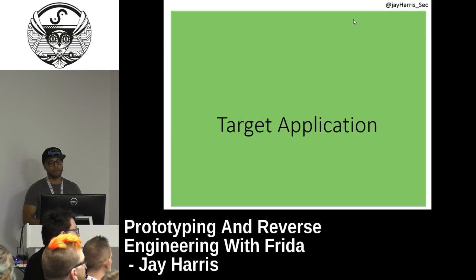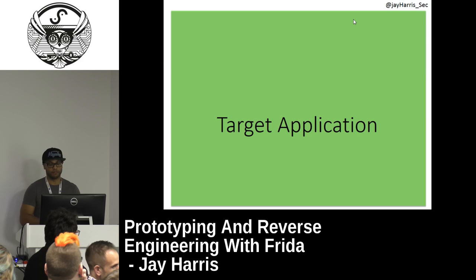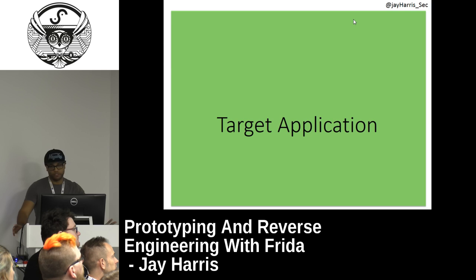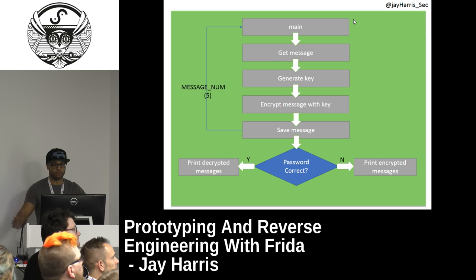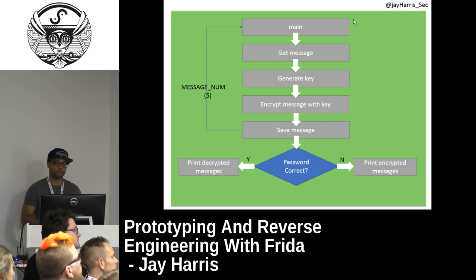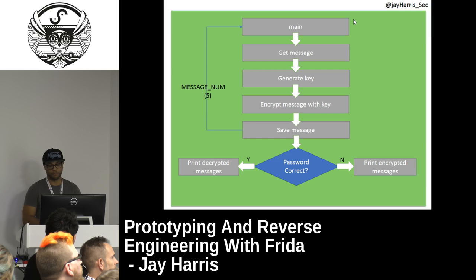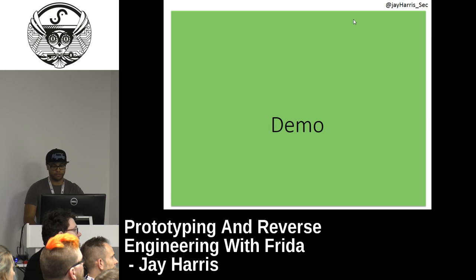We're going to look at a fake application — one I wrote, and the source code is online if you want to play along after this talk on the Digital Interruption GitHub repo. This target application will ask the user for some kind of message, then create a key, encrypt that message with that key, and save it in memory. It's not a particularly useful application, but it will let us play with Frida. If you enter the correct password, it will decrypt the messages; if you don't know the password, it obviously won't. The password is just hard-coded in the application.